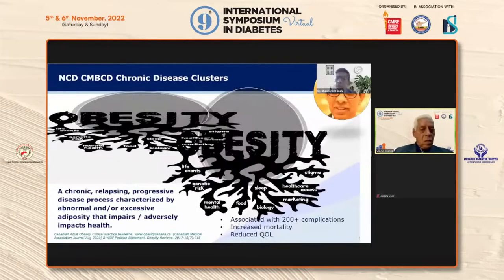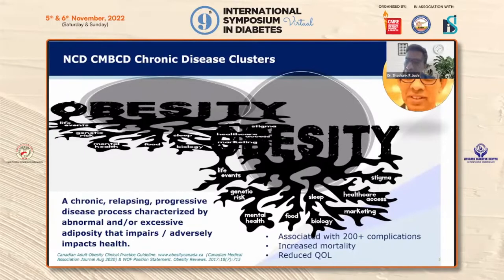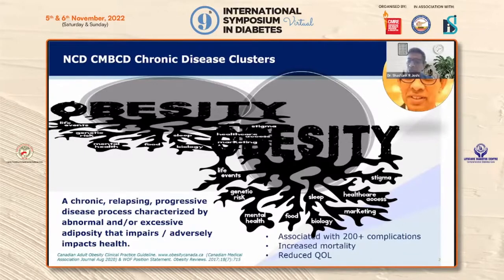The NCD explosion, or non-communicable disease explosion, has its underlying root in obesity. All the chronic disease clusters we see today in modern medicine are related to obesity. Obesity is a chronic, relapsing, progressive disease process characterized by abnormal and/or excessive adiposity which impairs or adversely impacts health. It has several factors like sleep, food, biology, mental health, food marketing, genomic risks, life events, and stigma, and is associated with 200-plus complications.